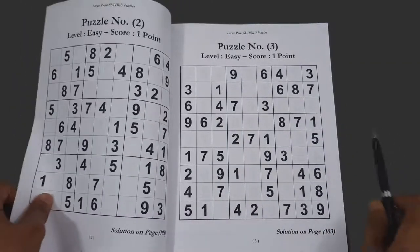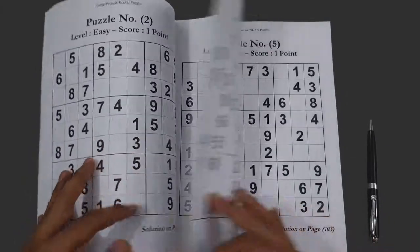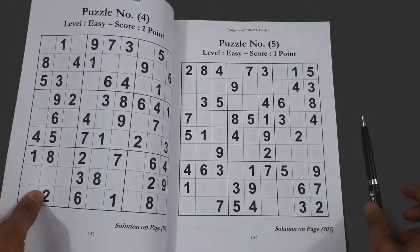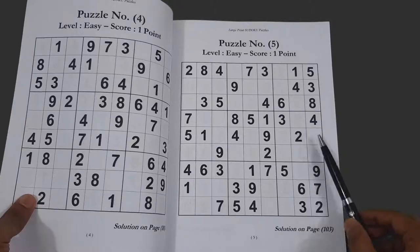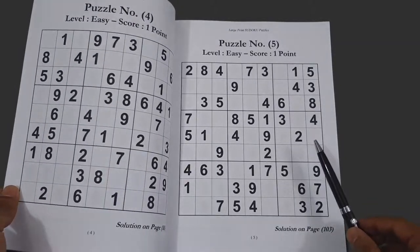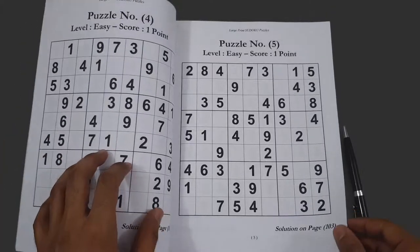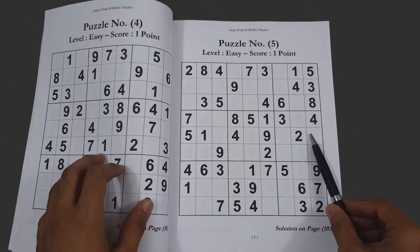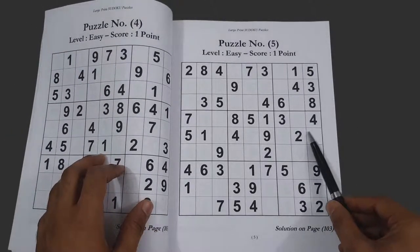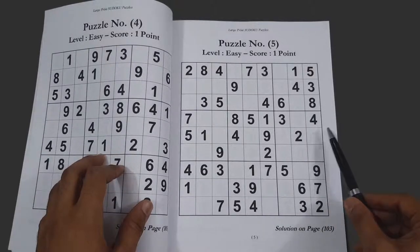You can immediately notice the larger print size which has mainly two benefits. Number one is that it is easier to see for older people and younger people as well. And number two is that there is more room for you to write different possibilities on the numbers that should go in a certain box.